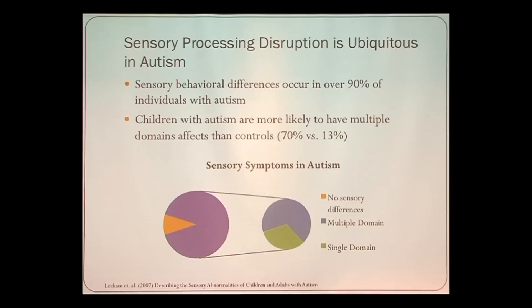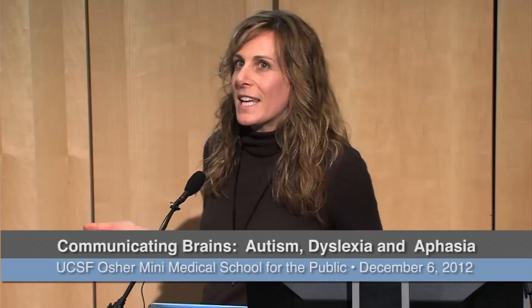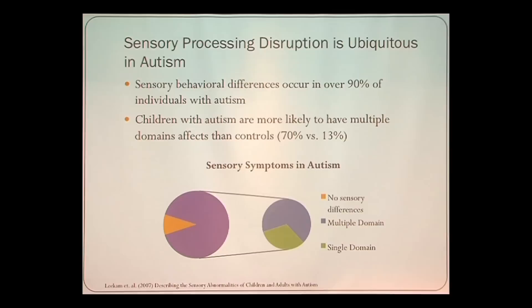Sensory processing disruption seems fairly ubiquitous in autism. Until now it hasn't been a core feature of the clinical diagnosis in the DSM-4-TR. But with the DSM-5, hyper- and hypo-responsivity to sensory input is now one of the core features of autism. We see behavioral sensory response differences in upwards of 90% of kids with autism — it's a critical feature for understanding the disorder and the barriers to learning.